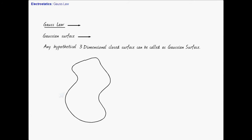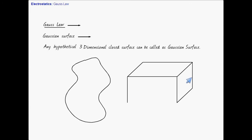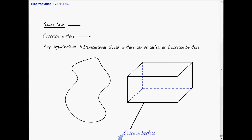There need not be a physical body present. For example, if I am considering a Gaussian surface of cubical shape, it is not that there is actually a cube present. I am imagining a hypothetical cube in space and calling this cube my Gaussian surface.